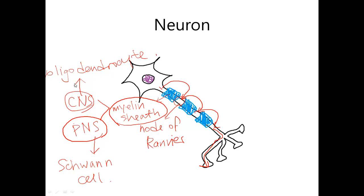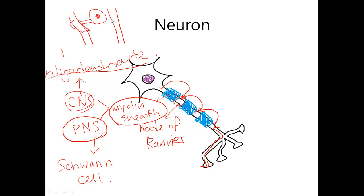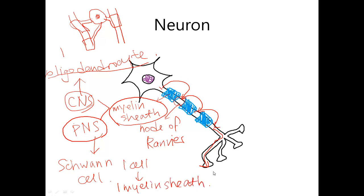One thing that is different is that one oligodendrocyte cell creates multiple sheaths. So one axon is here, another axon is here, and there is one oligodendrocyte cell, from which there is one sheath here and another sheath here. So one oligodendrocyte cell can make several myelin sheaths for several neurons. However, for Schwann cells, only one cell can form one myelin sheath — one myelin sheath, one cell. The Schwann cell cannot make multiple myelin sheaths.